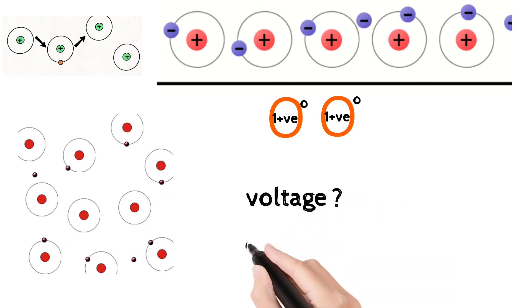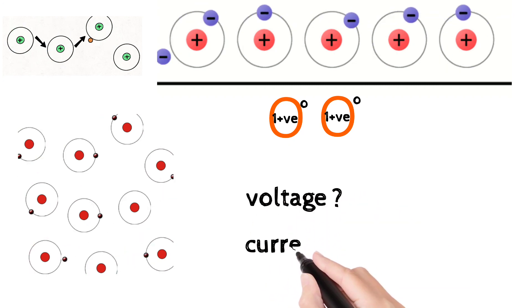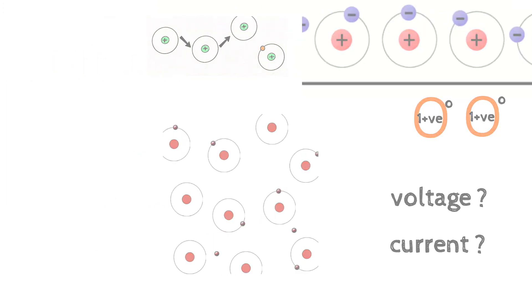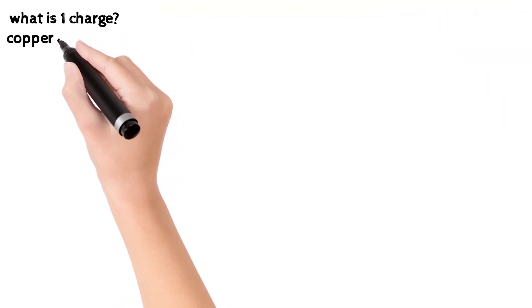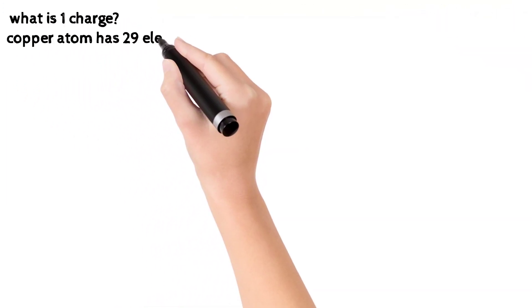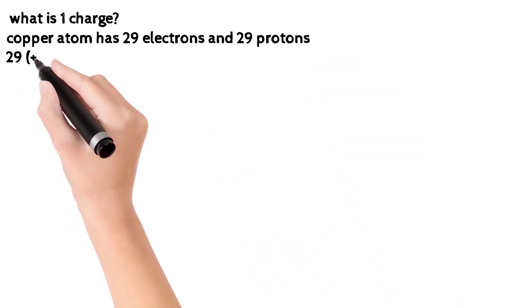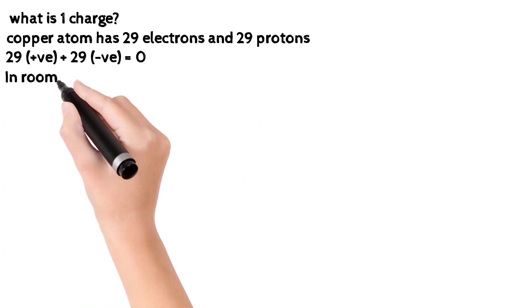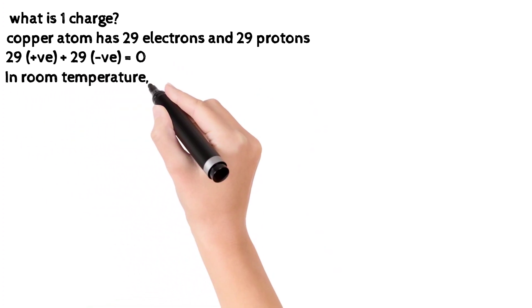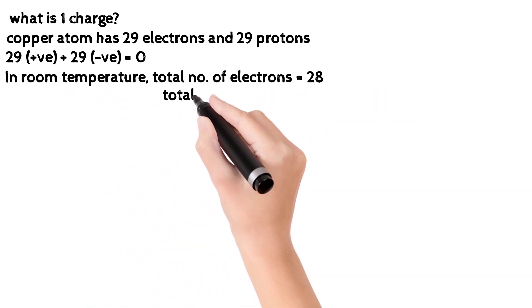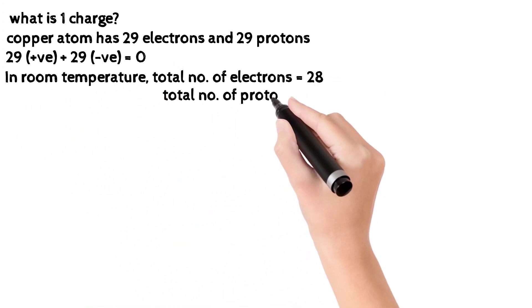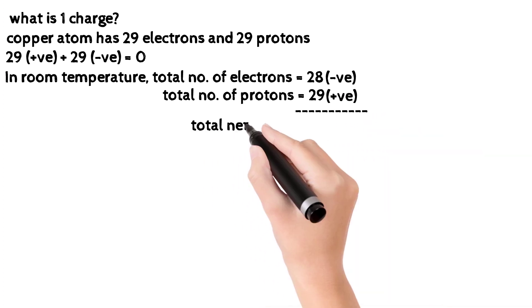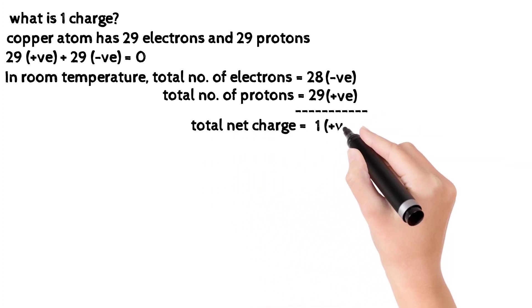Now let's see what voltage and current are. In a copper atom, there are 29 electrons and 29 protons, so the net charge is zero. However, when the valence electron is released, the atom has 29 protons but fewer electrons, giving a net positive charge of one.